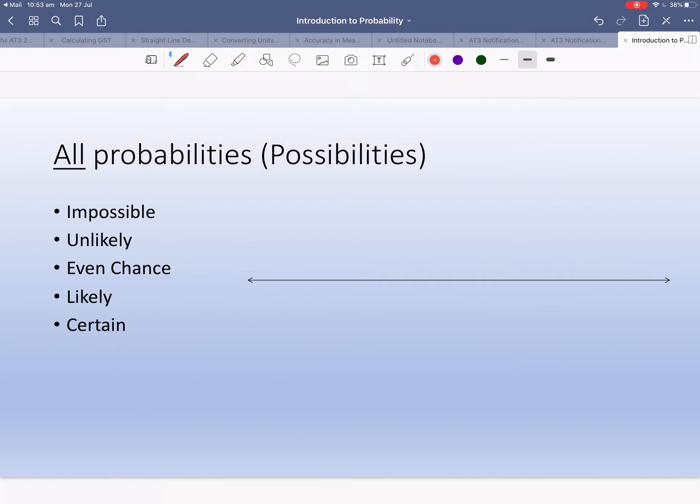All probabilities lie on this arrow. Down here at zero - we're going to look at this a little bit more in the next lesson - but this is impossible down here.